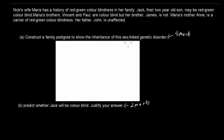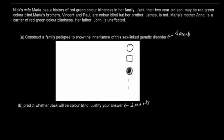Welcome back. For this question, what you should do first is quickly go through the different symbols you'll be using. An unaffected circle with no coloring is the unaffected female. A square which is not filled in is the unaffected male. A circle which is colored in is your affected female. And a square which is colored in is your affected male.